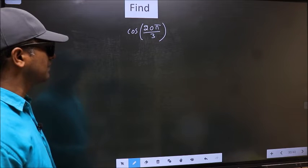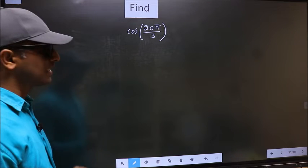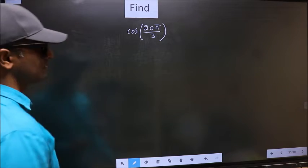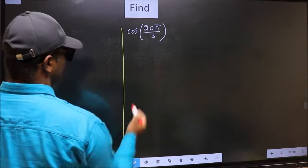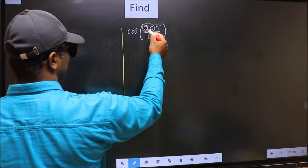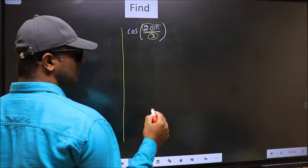Find cos 20π by 3. To find this, we should follow this method. See, in the denominator we have 3, in the numerator 20.